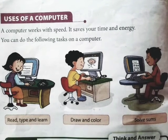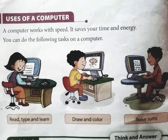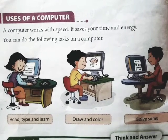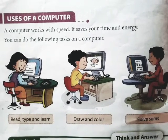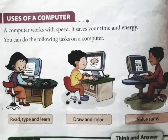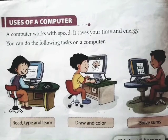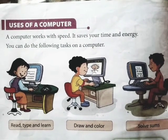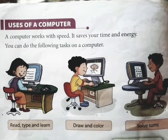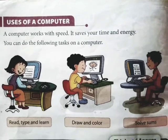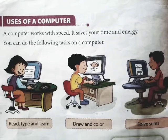You can do the following tasks on a computer. The first task — you can see the picture on the left side. A girl is sitting on a chair in front of a computer. What is she doing? She is typing, she is reading something, and she is learning something. So she is reading, typing, and learning.